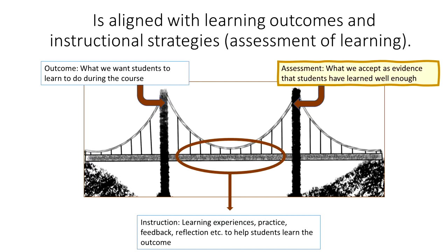When we've aligned the outcome and assessment, we can then think about the instruction — what kinds of learning experiences, practice, feedback, and reflection are going to help students learn that outcome. This process altogether is about accomplishing what we intend to with our courses and assessing what we wanted to measure.